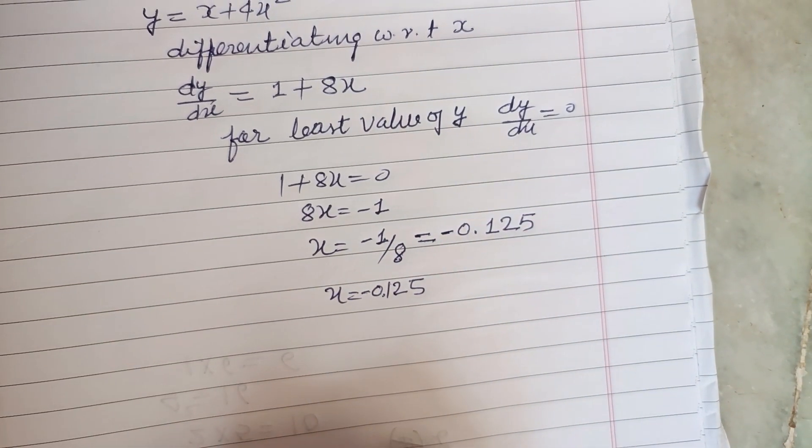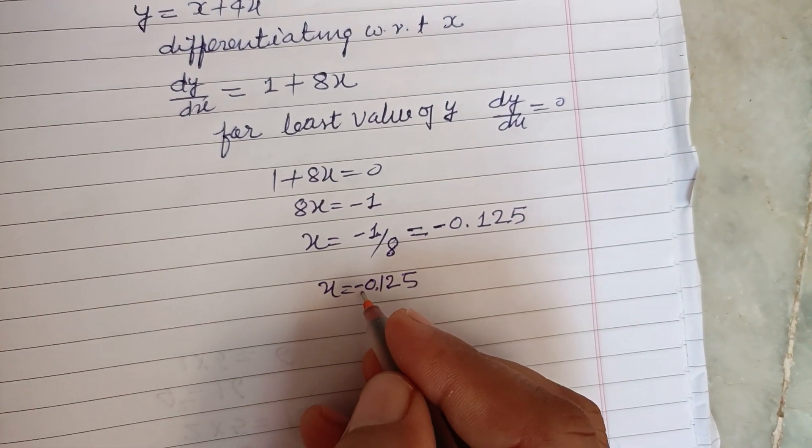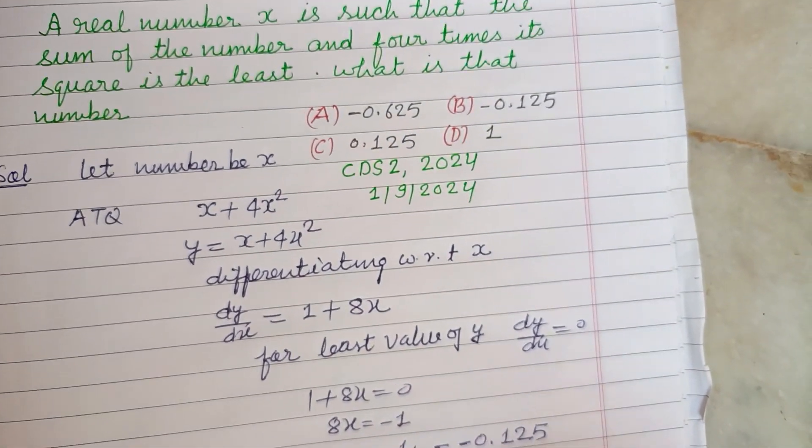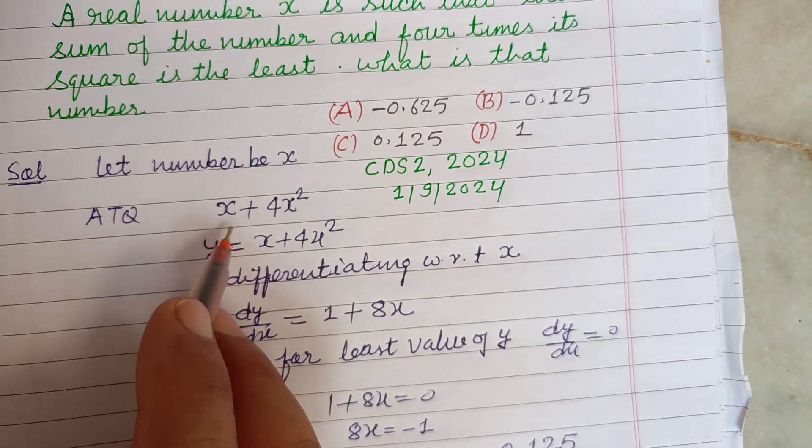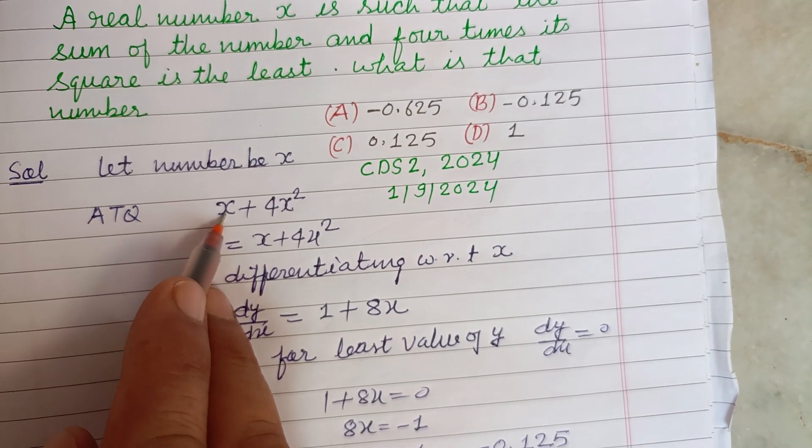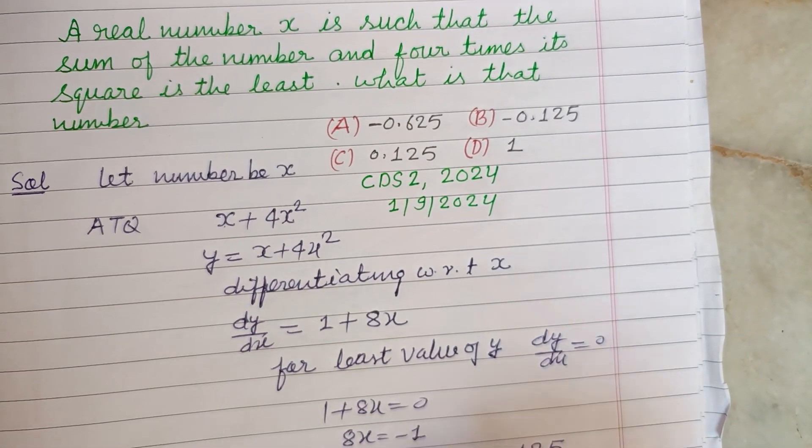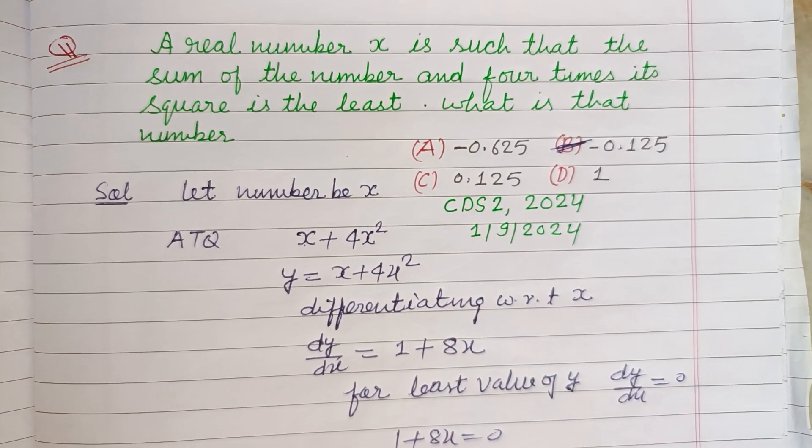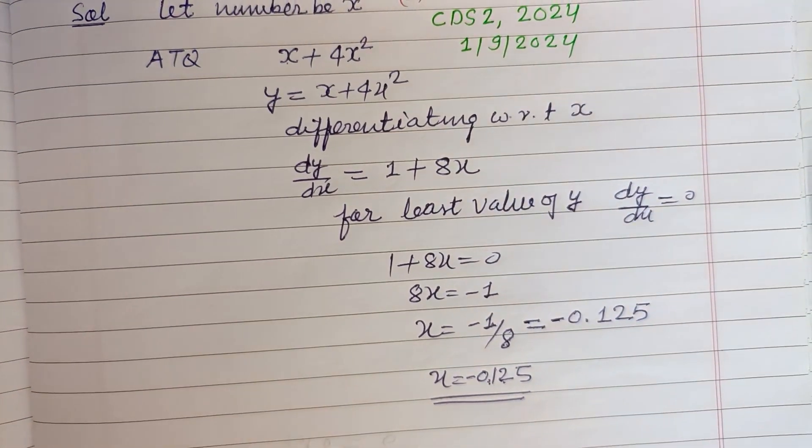This is the value of X to make X plus 4X squared least. So B is the correct answer. I hope you got it. Please like the video, subscribe the channel, thanks for watching.